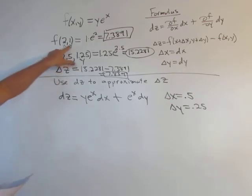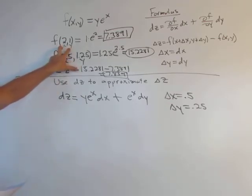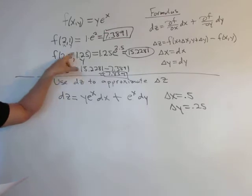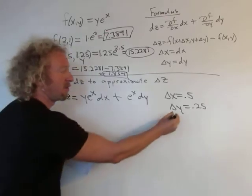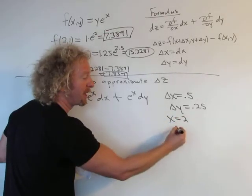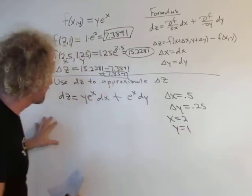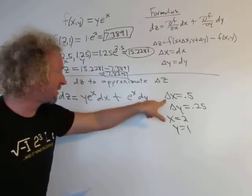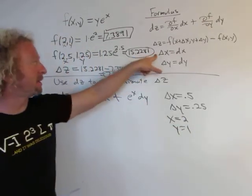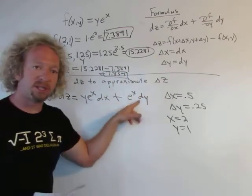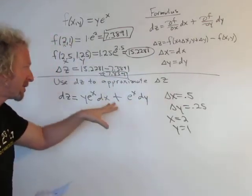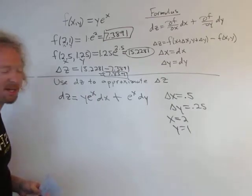Now what about x and y? x is 2 and y is 1. You want to use the initial point where you start. Do not use these. So x is 2 and y is 1. We just plug everything in. Δx equals dx, and Δy equals dy. Whenever Δx is small, you can think of it as dx. That's the idea, likewise for dy.